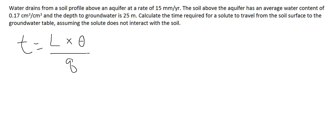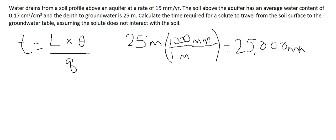So we have a thickness of 25 meters, and we know that in one meter there are 1000 millimeters, which leaves us with a total thickness of 25,000 millimeters. This is the value that we will plug into our equation.